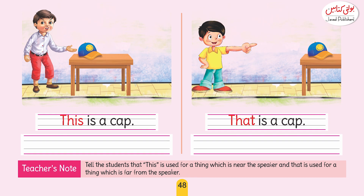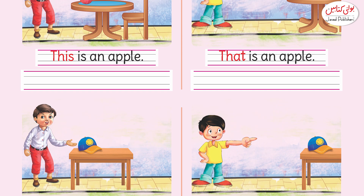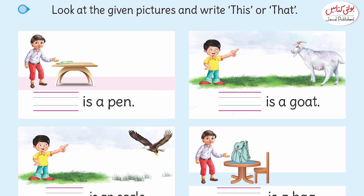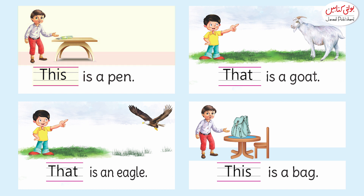Dear children, now you will have to make sentences using 'this' and 'that'. Let's do an activity — look at the given pictures and write 'this' or 'that'. In the first picture, a boy is holding a pen close to him. Since the pen is near, we use 'this': 'This is a pen.'